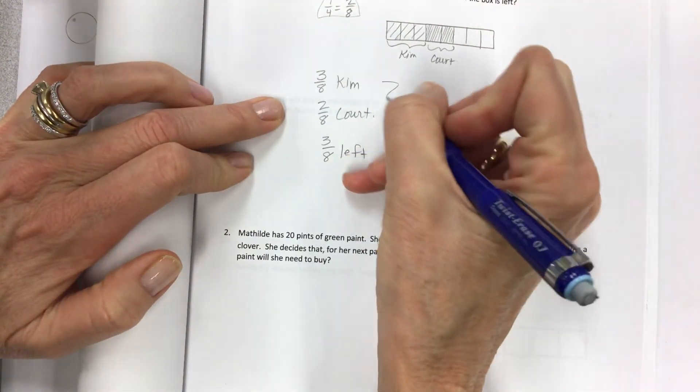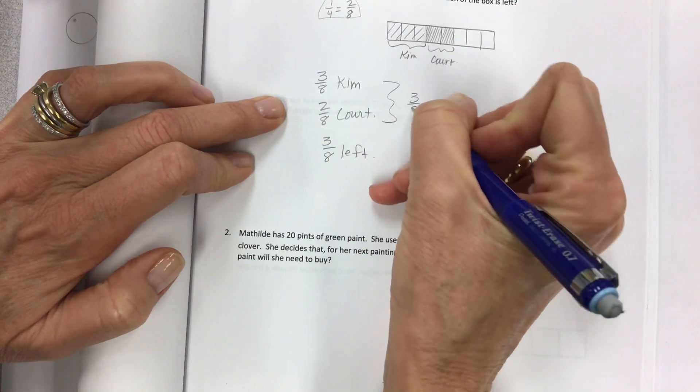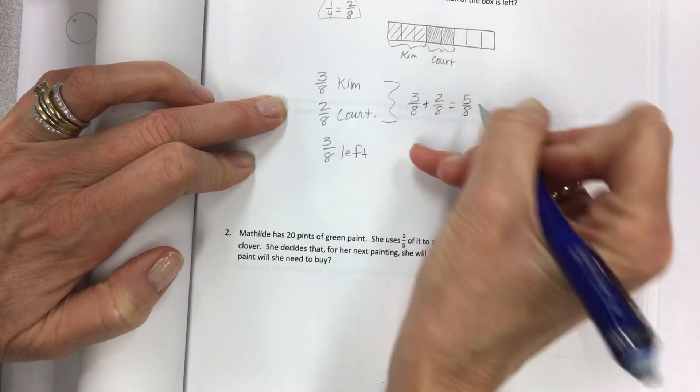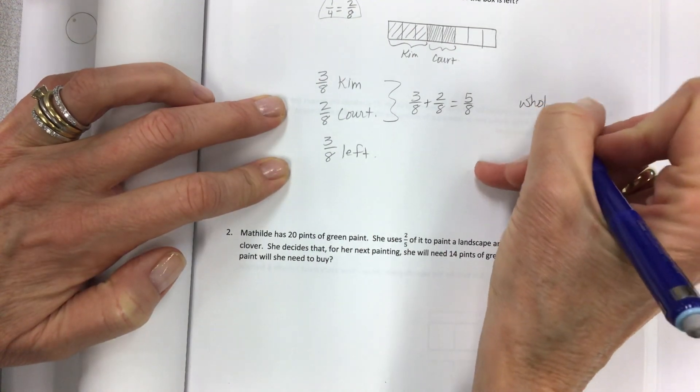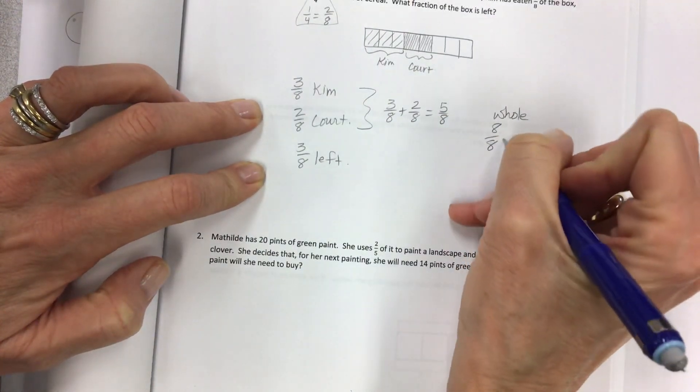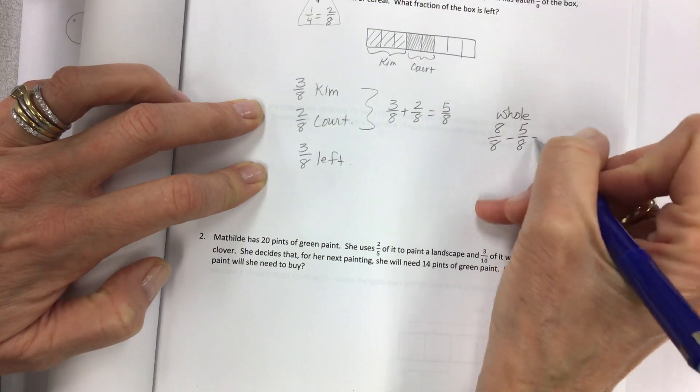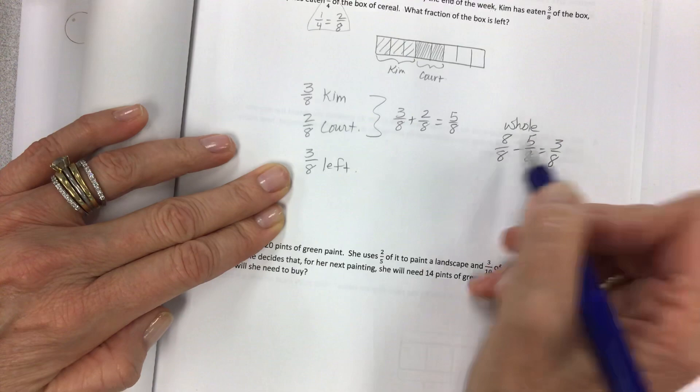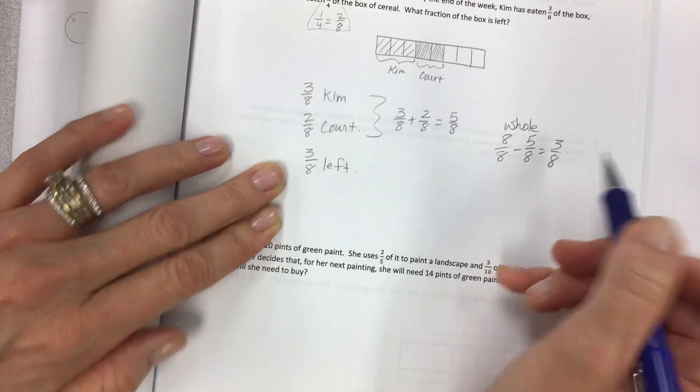So three-eighths for Kim, two-eighths for Courtney, and three-eighths left. It's basically just using the tape diagram to solve. You can also do, if you want to do more work, three-eighths plus two-eighths equals five-eighths. Take the whole, eight-eighths, and subtract what is eaten. If you can't figure it out from the picture, you can solve it mathematically.